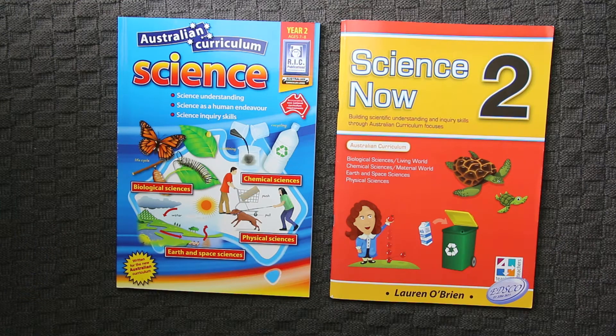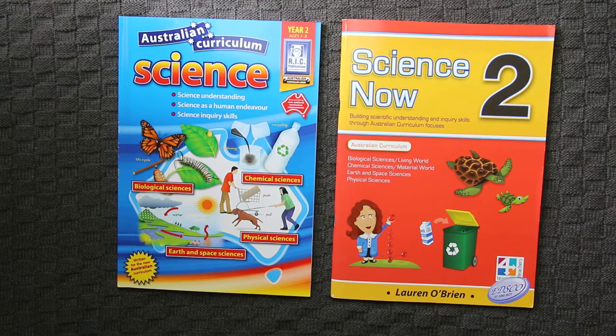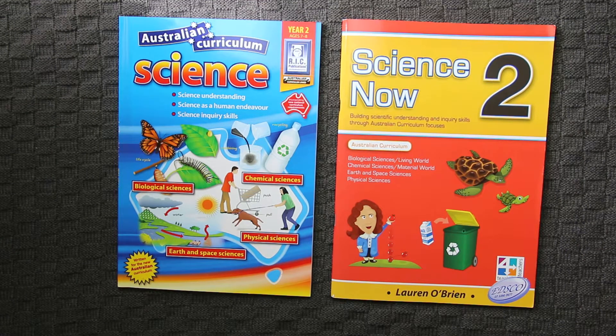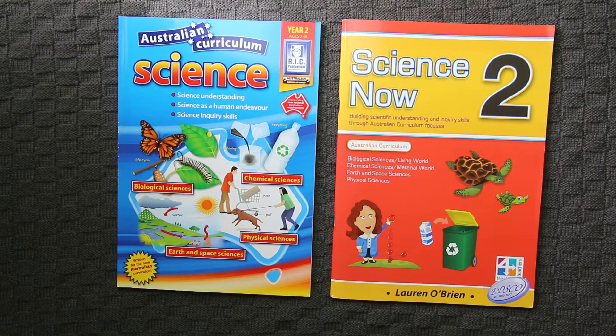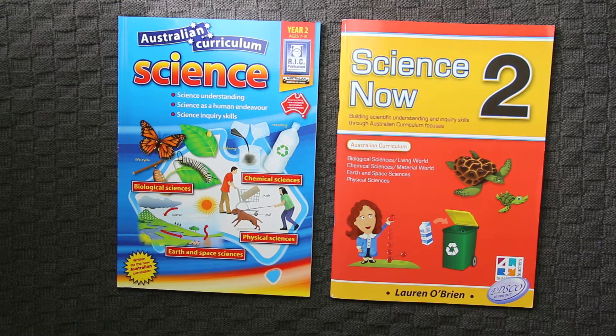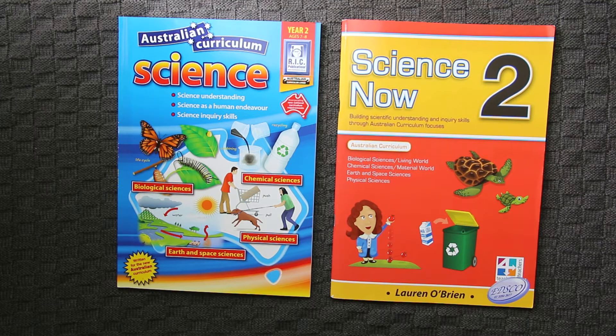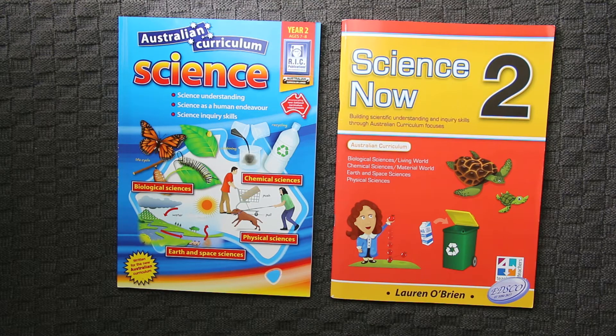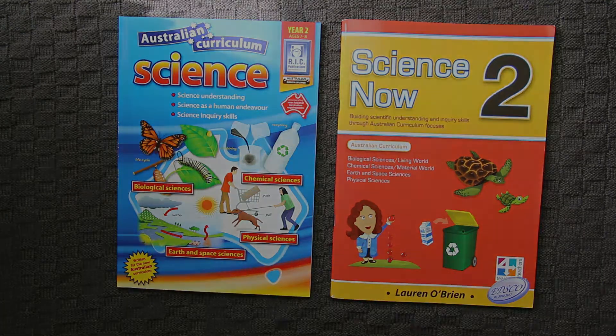Today I wanted to take you on a bit of a walkthrough of a couple of comparative science workbooks. These are both year two science workbooks. One is put out by RIC Publications and the other is Teachers for Teachers. I just wanted to show you inside, have a little bit of a comparative look at them and see the differences and similarities. Let's have a look inside.